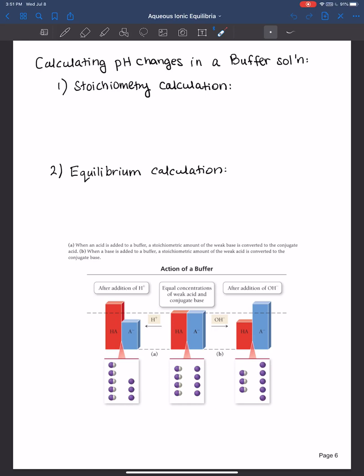If we look at the figure at the bottom here, when acid is added to a buffer a stoichiometric amount of weak base is converted to the conjugate acid. When you add base to the buffer then a stoichiometric amount of the weak acid is converted to the conjugate base.